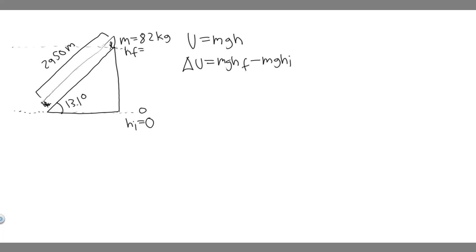And then h final is going to be equal to something we have to solve for. But it's basically just going to be this distance right here. So h initial is going to be 0. So if we plug in 0, it doesn't matter what m and g are. This is just going to be 0.